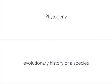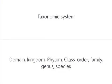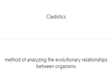Phylogeny is the evolutionary history of a species. The taxonomic system classifies organisms by domain, kingdom, phylum, class, order, family, genus, and species. Cladistics is the method of analyzing the evolutionary relationships between organisms.